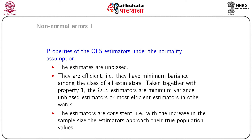When we assume normality, the ordinary least square estimates of the regression parameters satisfy certain properties. First, the estimates are unbiased under the normality assumption. Second, they are efficient — meaning they have minimum variance among the class of all estimators. Taken together, the OLS estimators are minimum variance unbiased estimators, or most efficient estimators.